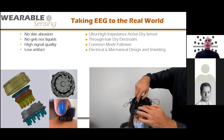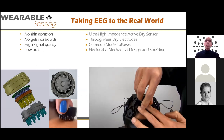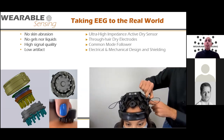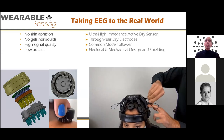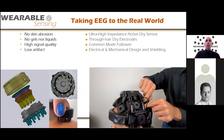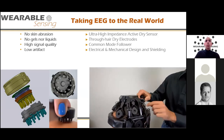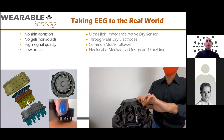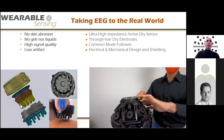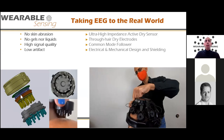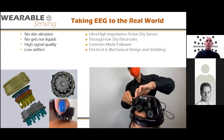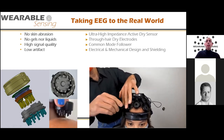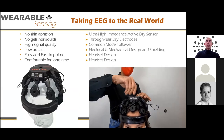Sponsors asked how we deal with artifacts given high contact impedance from dry electrodes. We did electrical and mechanical designs — springs behind the electrode keep the sensor in place when the headset moves. We placed the amplifier immediately behind the electrodes and encased everything inside a Faraday cage, which shields from electromagnetic interference. Now the only signal source is inside the head, amplified before leaving the headset.